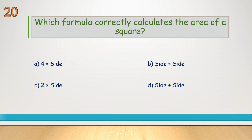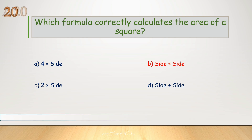Which formula correctly calculates the area of a square? Correct answer is B, side times side.